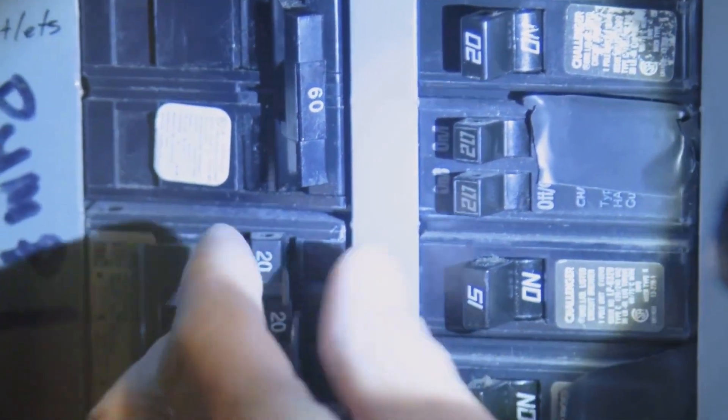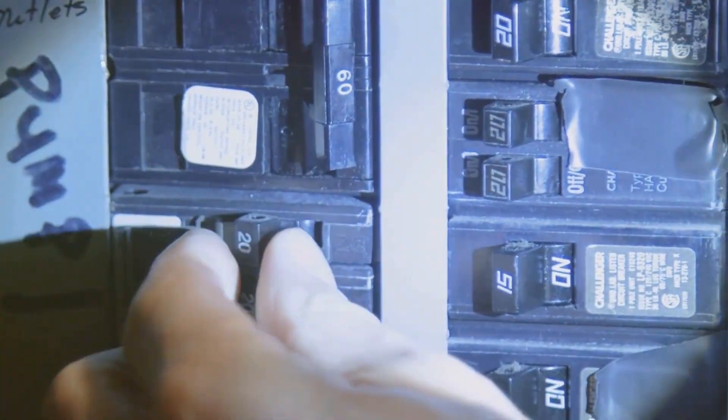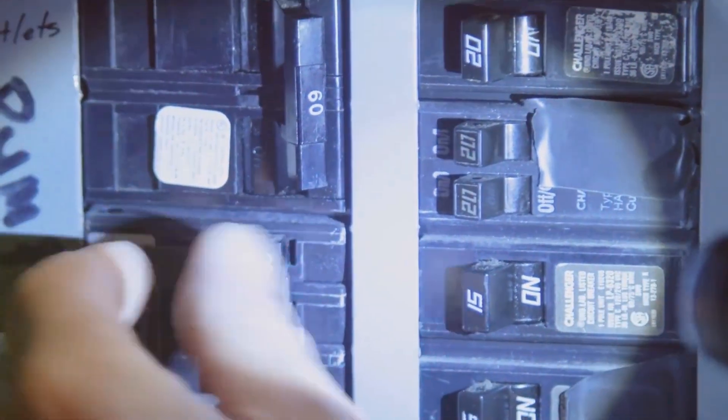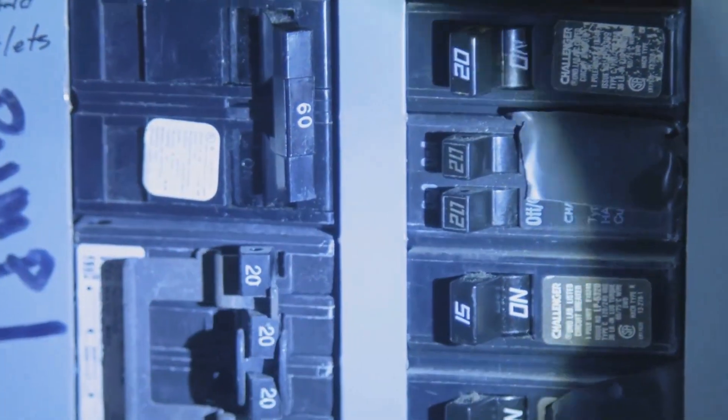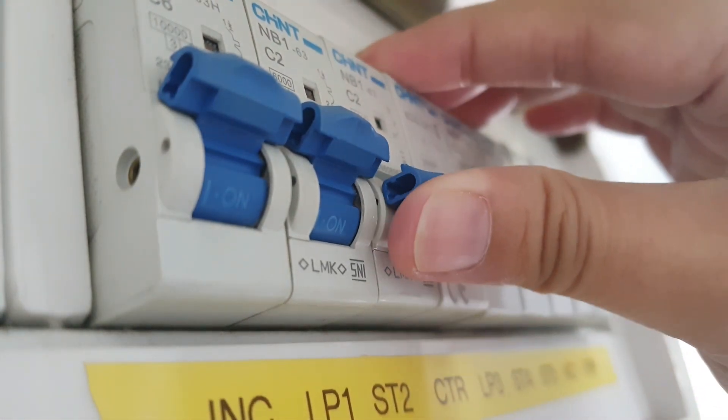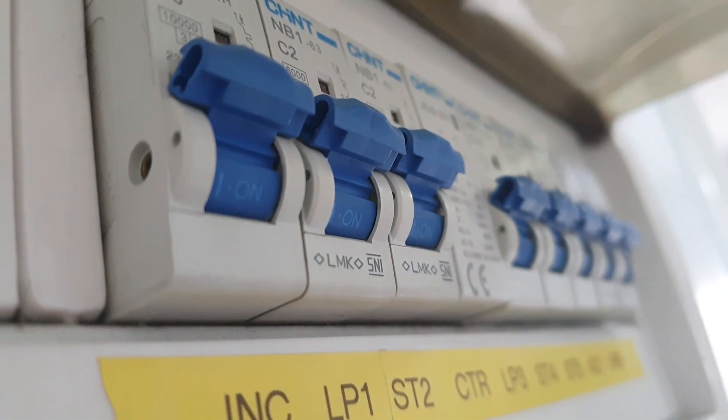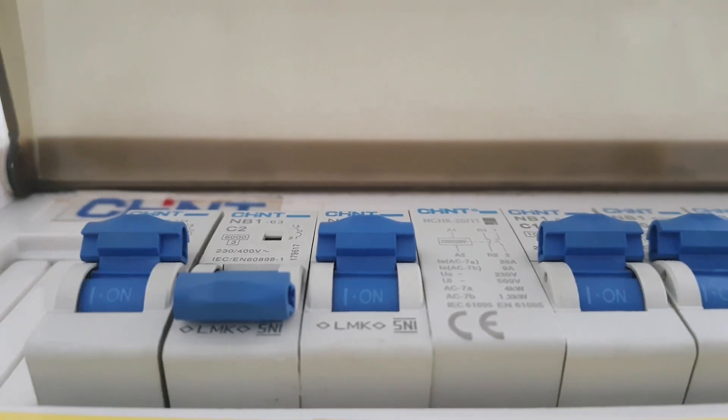Ever considered what keeps you safe from electrical shocks at home or in the workplace? It's high time we shed some light on two key devices that play a crucial role in electrical safety: the earth leakage circuit breaker or ELCB and the residual current circuit breaker also known as RCCB.